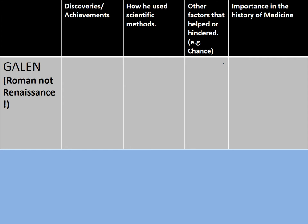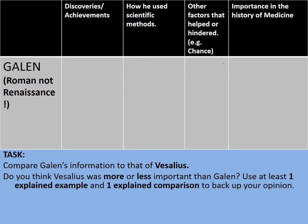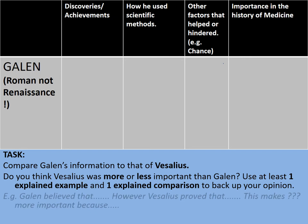Let's consider adding Galen to your table as a thinking activity. Galen was an ancient Roman and not a Renaissance figure; rather, it's his work that much of the Renaissance is correcting or adding to. Your task: compare Galen's information to that of Vesalius. Do you think Vesalius was more or less important than Galen? Use at least one explained example and one explained comparison. You might structure it as: 'Galen believed that... however, Vesalius proved that... this makes either Galen or Vesalius more important because...'